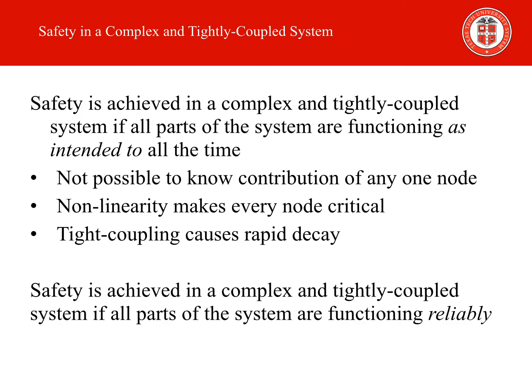How does an organization that is complex and tightly coupled achieve organizational safety? Because the organization is complex, it is not possible to know the exact contribution of any one node to the stability of the network, or how a disruption at one node can lead to the collapse of the entire network due to nonlinear dynamics. Since the nodes are tightly coupled, minor disruptions can quickly escalate to full organizational safety events. Essentially, all parts of the organization must be functioning as intended — reliably, all the time.